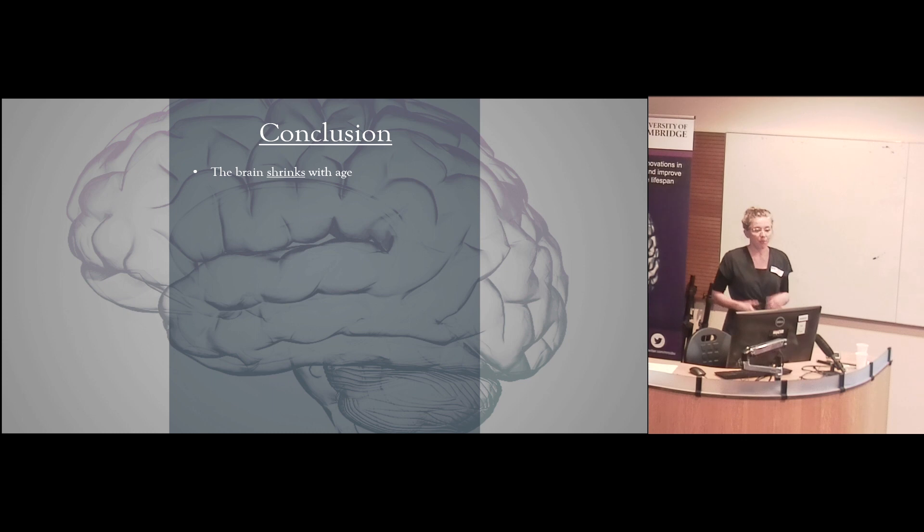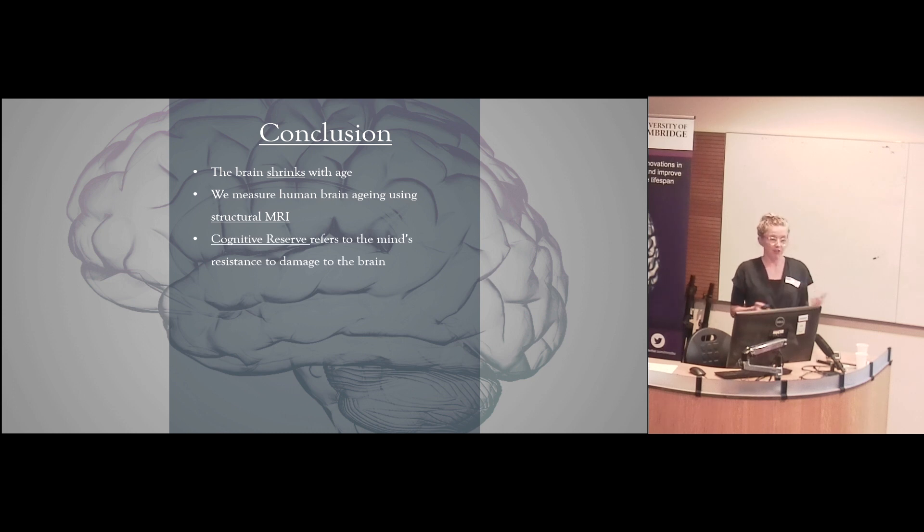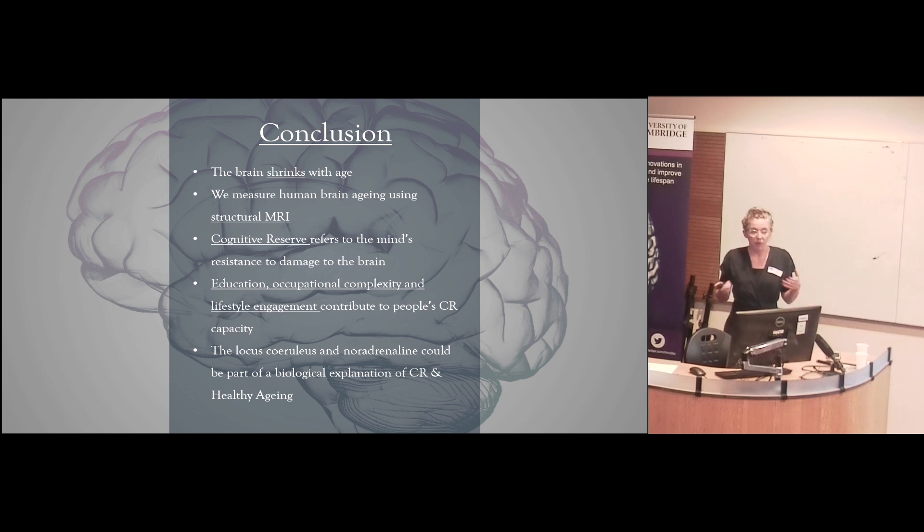So just to conclude, I've shown you that the brain shrinks with age. I've told you why it does. I've showed you that we measure this with structural MRI and that we can quite nicely tie in the stuff that we're finding in neuroimaging with animal models, what I showed you about the rat. I've also shown you that cognitive reserve refers to the mind's resistance to damage to the brain. So despite brain damage, people are sometimes still fine. And we've also learned that education, occupational complexity, and lifestyle engagement contributes to people's cognitive reserve capacities. So finally, I've just given you a theory, something people are working on, that this LC and noradrenaline could be part of a biological explanation for cognitive reserve and for healthy aging. And I'll leave it at that. Thank you very much.